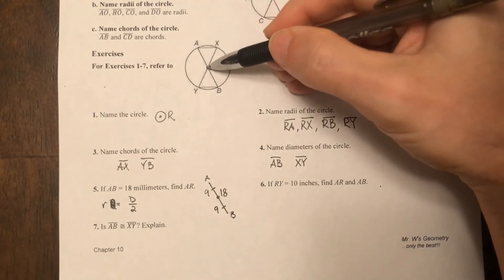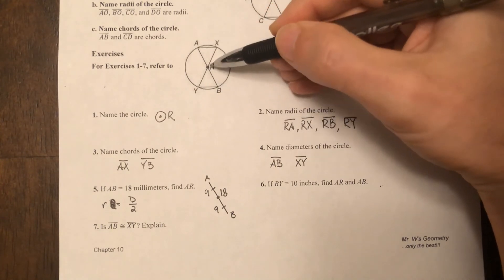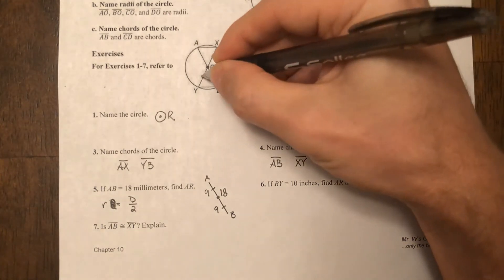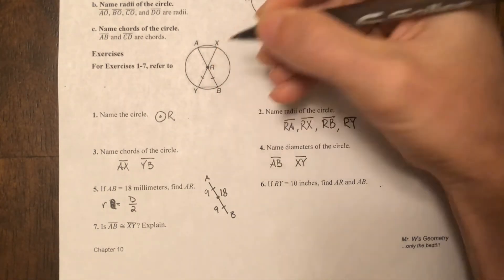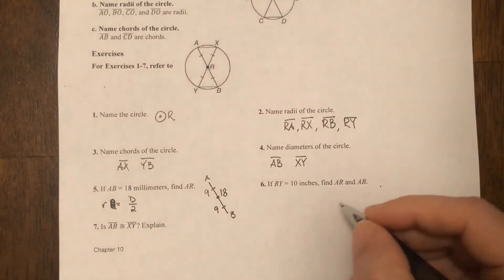So if the radius is 10 inches, find AR. Well, AR goes from the circle to the center of the circle to the outside edge. All radii in the same circle are going to be congruent. So if this is 10 inches, so is RB, so would RX, and so would RA. So we can say AR is going to be 10 inches.